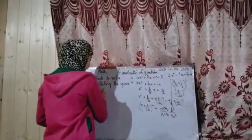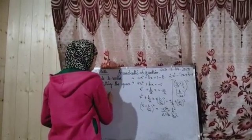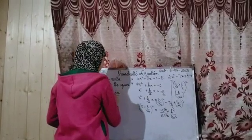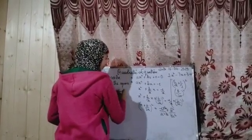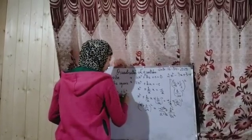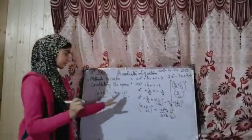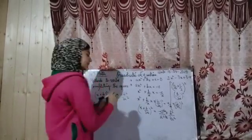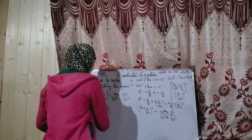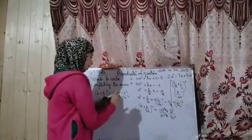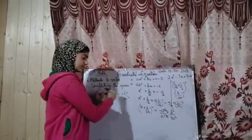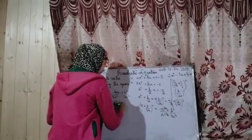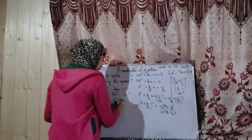It becomes (x + b/2a)² = -4ac/4a² + b²/4a². Writing b first, this gives (x + b/2a)² = (b² - 4ac) / 4a².